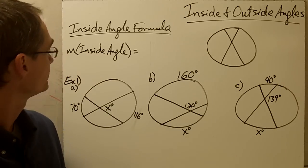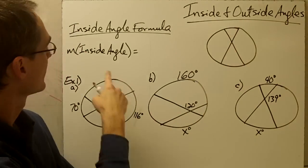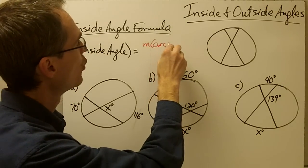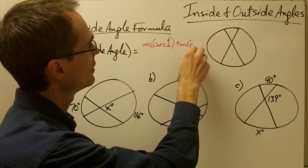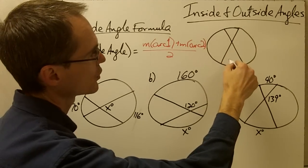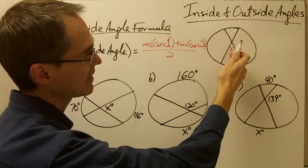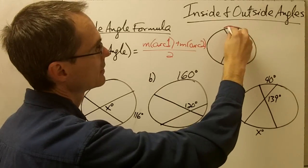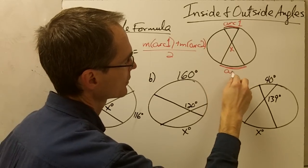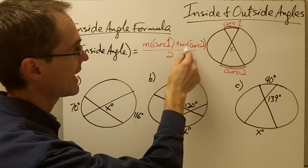The inside angle formula: the measure of an inside angle — remember, an inside angle is just an angle formed by two chords intersecting inside a circle — is equal to the measure of arc 1 plus the measure of arc 2, divided by 2. Here I've got two chords intersecting inside a circle; if I call this my inside angle x, this arc here is arc 1 and this arc down here is arc 2. So if I want to calculate the measure of angle x, I just take the measure of arc 1, the measure of arc 2, add them together, and divide by 2.